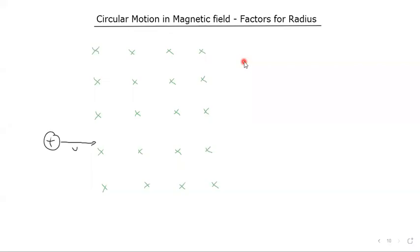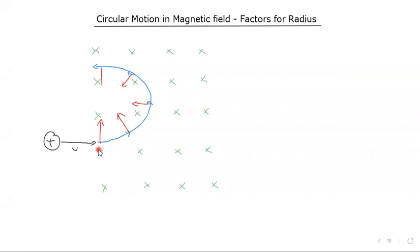Now we'll take a look at what happens when a positive charge enters the magnetic field and it undergoes circular motion. As we discussed before, this positive charge when it enters the magnetic field will basically undergo a circle. The circle will go sort of anti-clockwise, and throughout it's going to experience forces that are perpendicular to it.